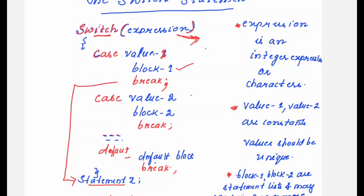If the value in the expression does not match value 1, it compares with value 2. If it matches, block 2 statements are executed, then break brings control out to statement x. It tries to match with value 1, value 2, value 3, value 4, and so on. Whichever value it matches, that corresponding block of statements gets executed, it comes out from that case, and directly prints statement x.